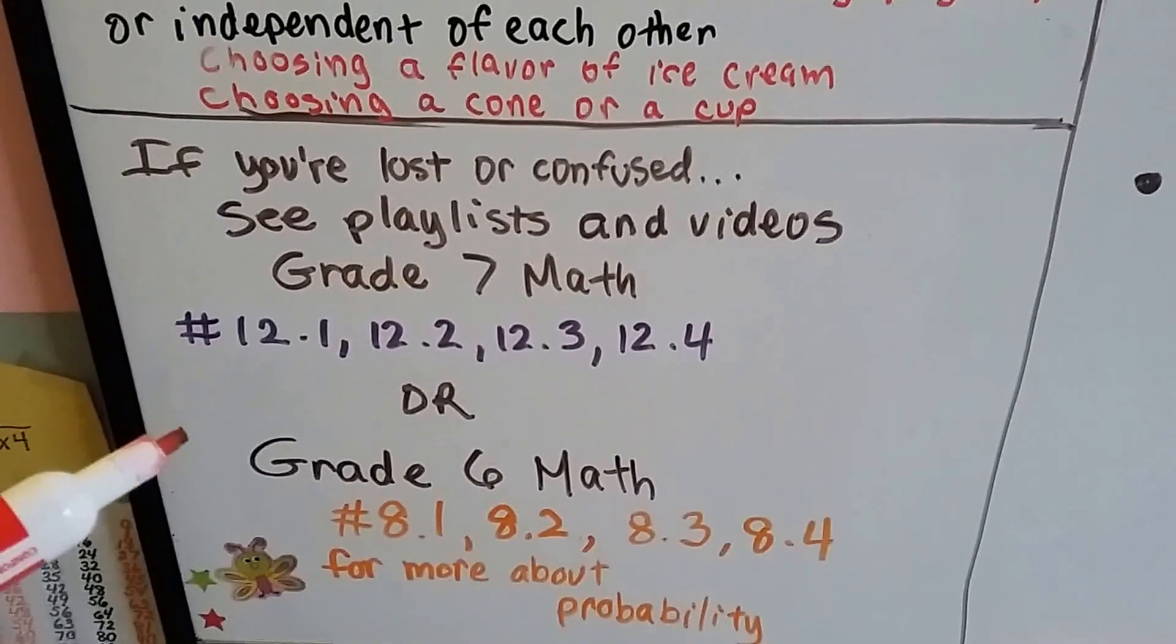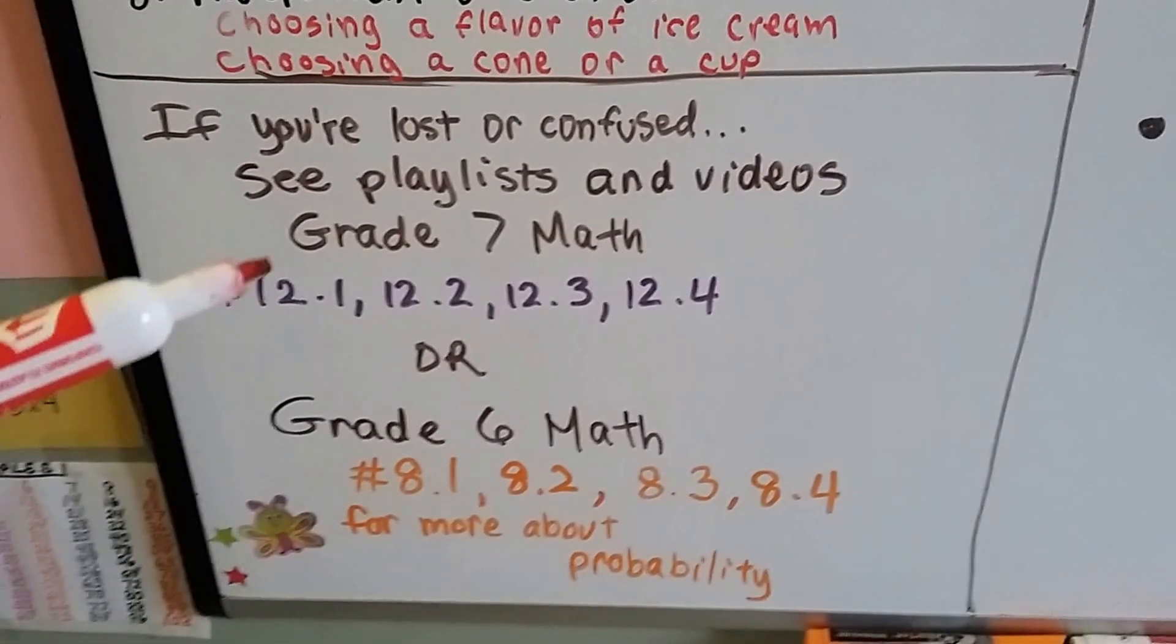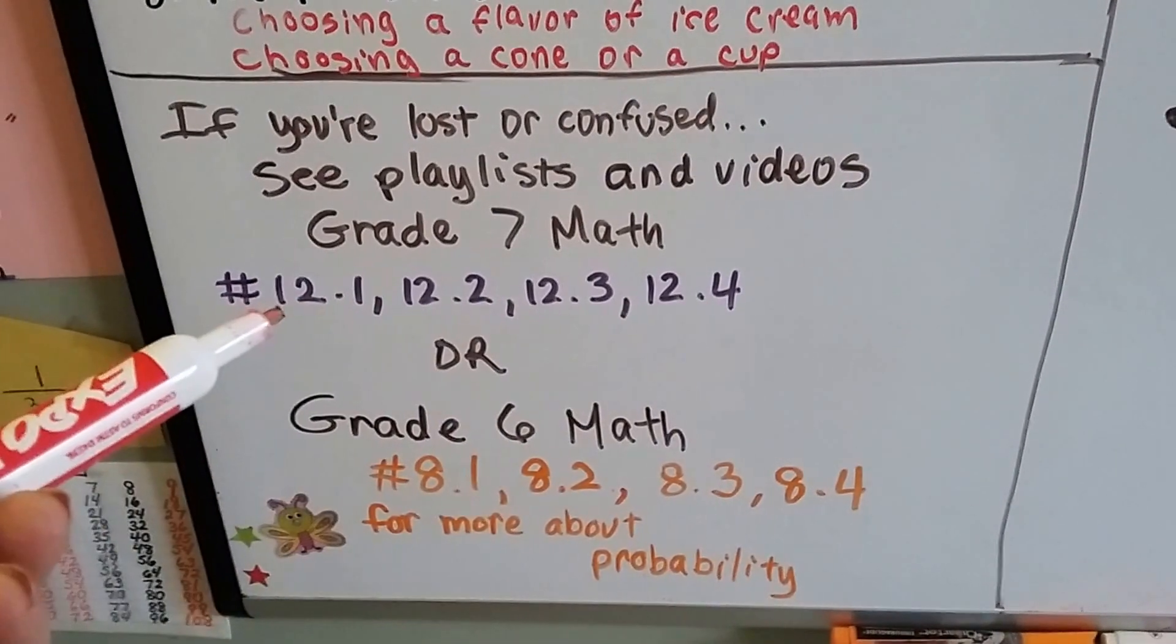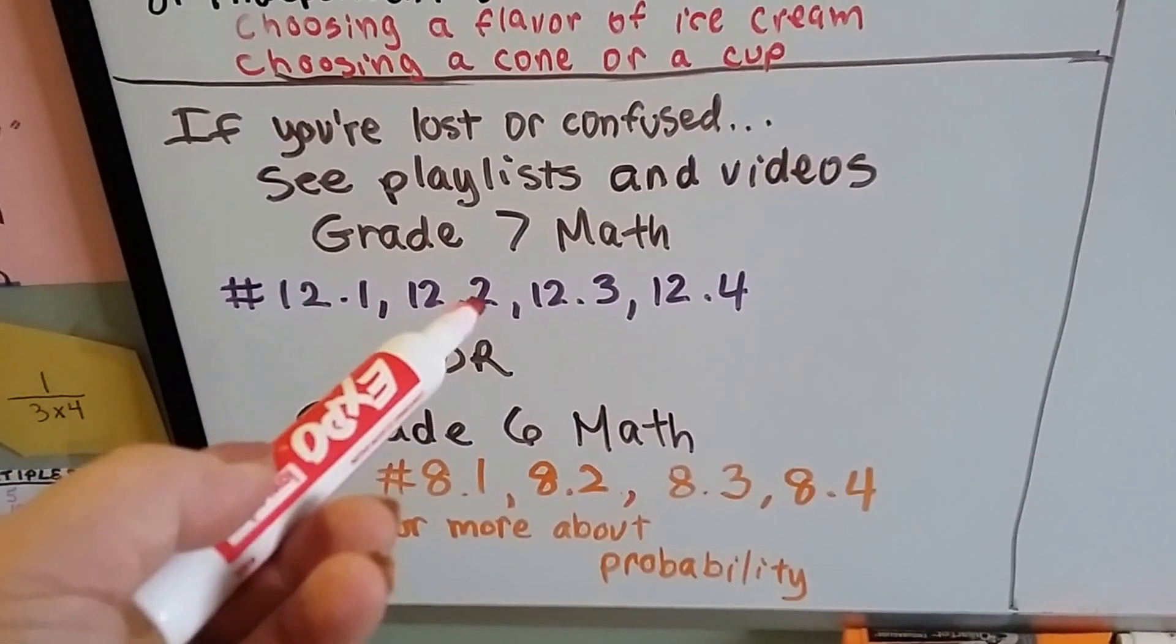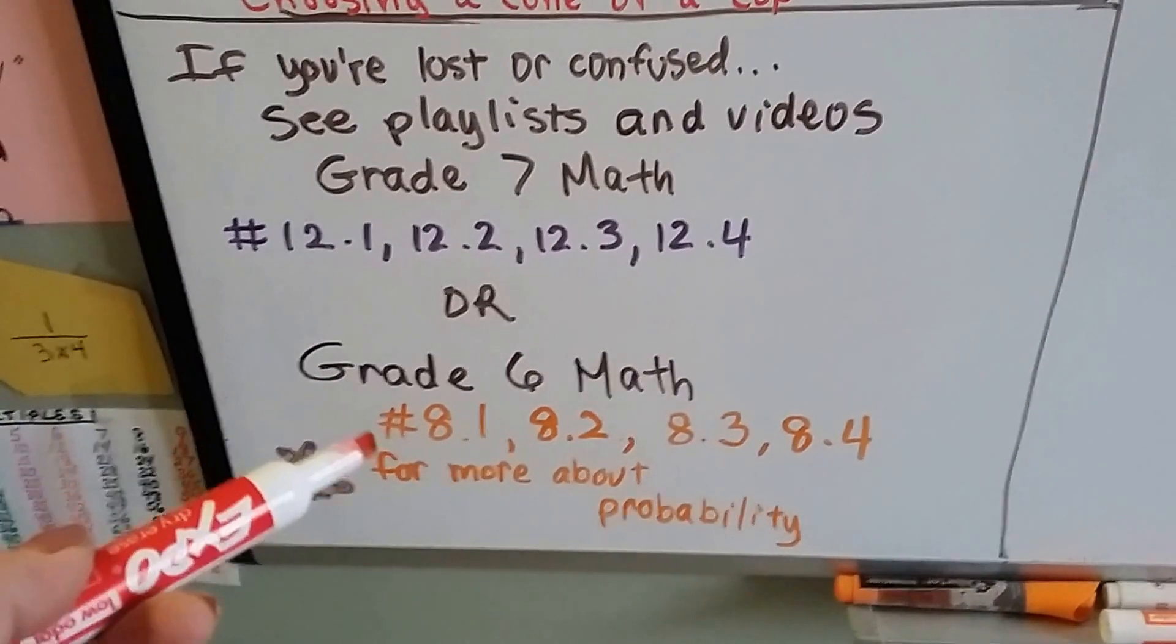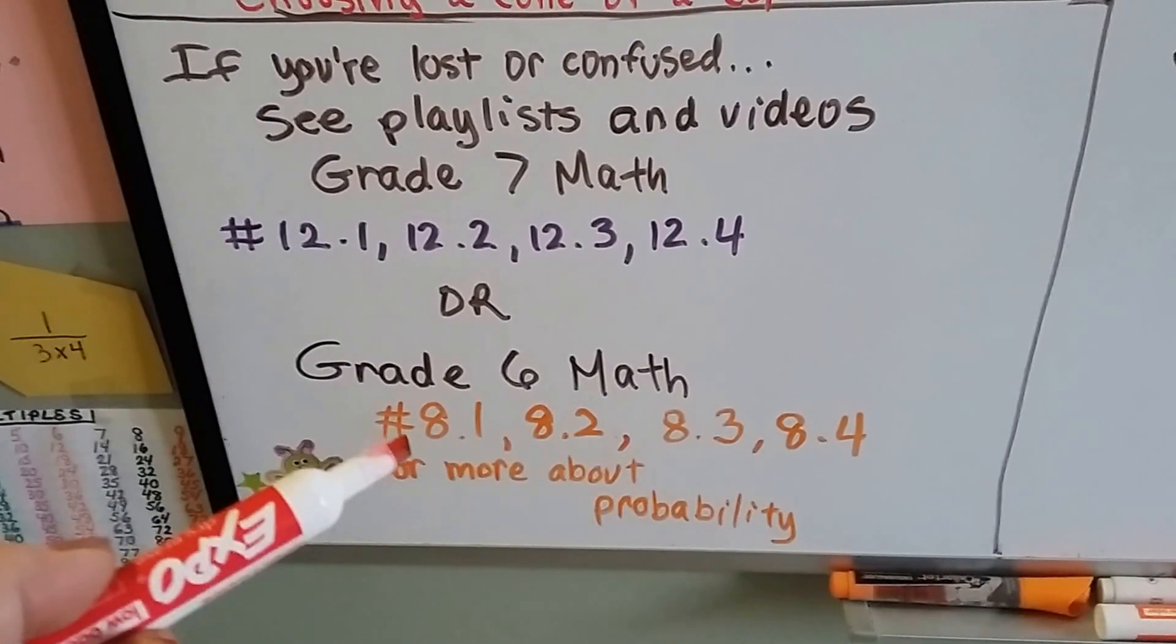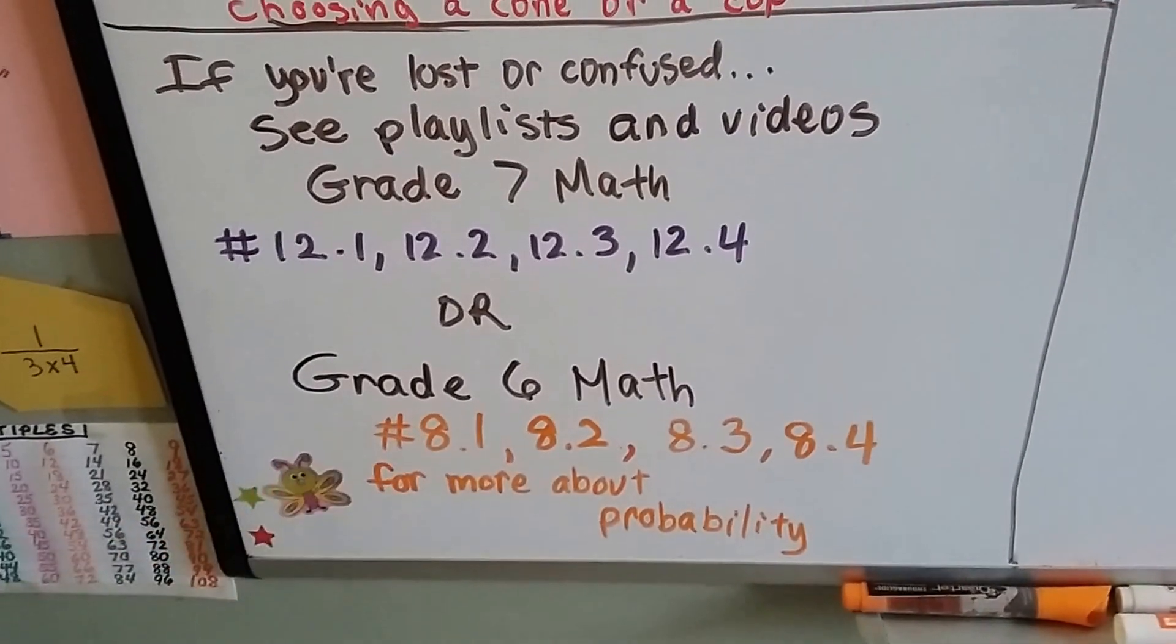Now, if you're lost or confused and you don't understand what I'm talking about, then that means you got a little bit ahead of yourself. You should go back to the Grade 7 playlist and watch the entire Unit 12: 12.1, 2, 3, and 4. And there's even A-B in there, so each of these has an A and a B video, so there's like eight videos here. And Grade 6 Math goes back to even more basic. So if you really want to begin at the beginning about probability, you might want to go back to the Grade 6 Math playlist for Joanne's School and start with 8.1. That'll help you a lot. Otherwise, let's keep going.